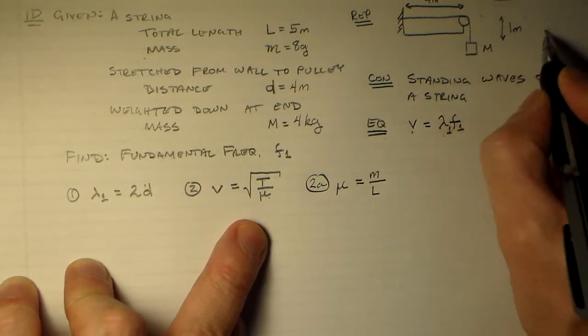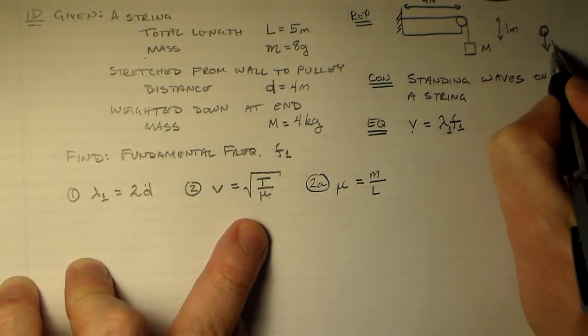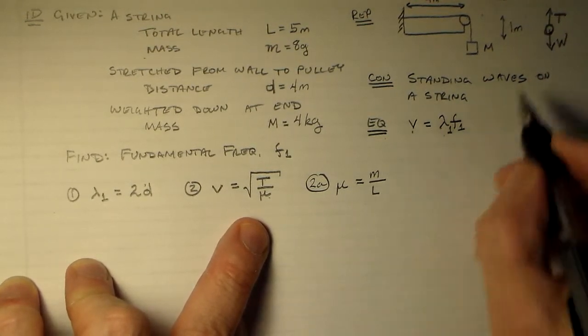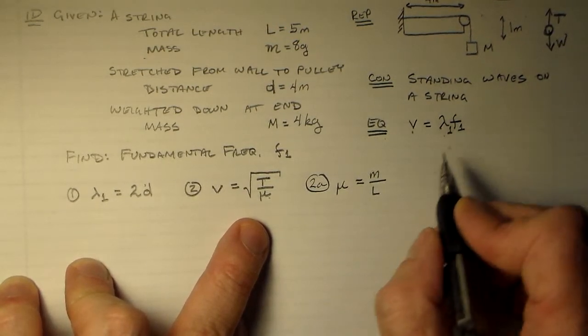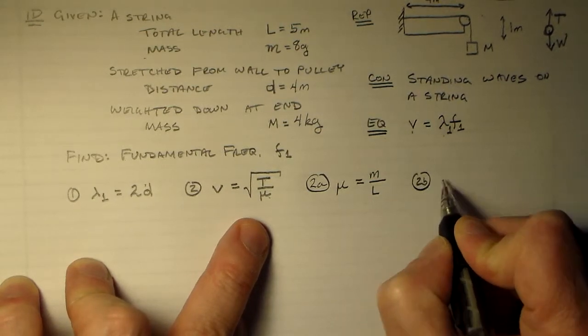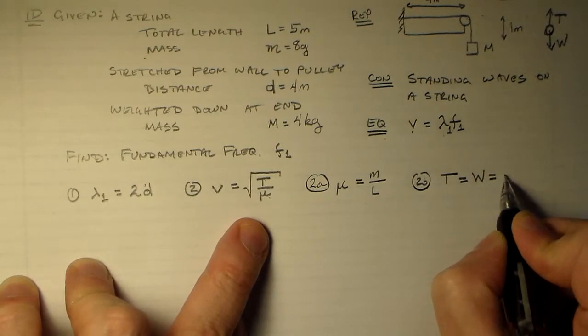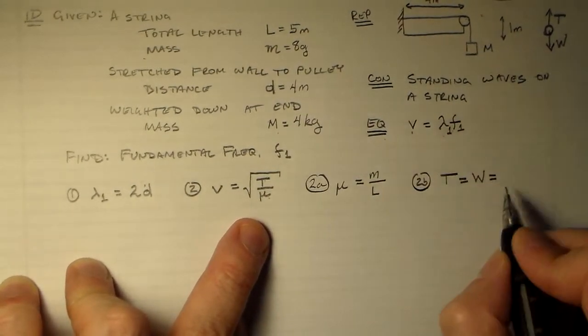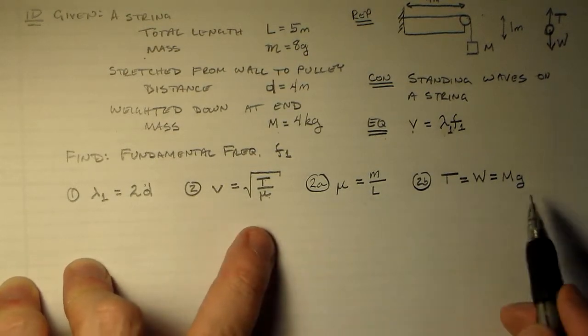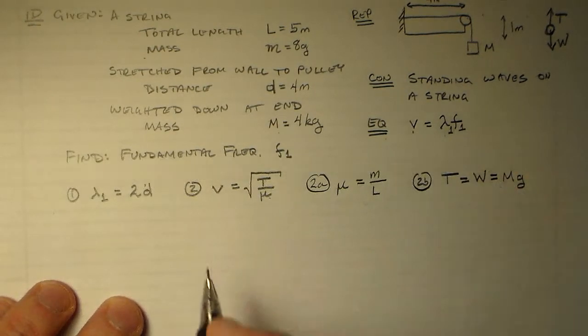The tension in the string all comes from this mass here. The only thing this mass has, if we draw a free body diagram really quickly, it's got the weight here and the tension here, right? So, we've got a weight and a tension. They cancel each other out, so the tension is going to have to be equal to the weight. And we already know what the weight is. That's just the mass of the block times the acceleration due to gravity. So, now there's actually nothing left. We've got everything we need. We can put that all together.